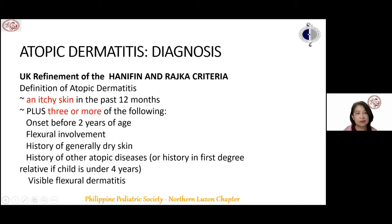The UK refinement of the Hanifin and Rajka criteria is used internationally for research and to better define atopic dermatitis. Its components are itchy skin in the past 12 months, plus three or more of: onset before two years of age, flexural involvement, history of generally dry skin, history of other atopic diseases or history in a first-degree relative if the child is under four years, and visible flexural dermatitis.